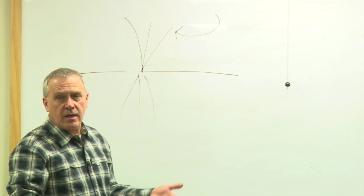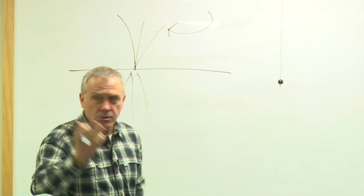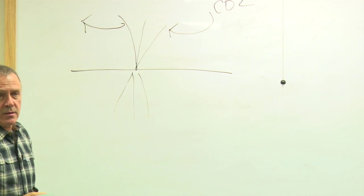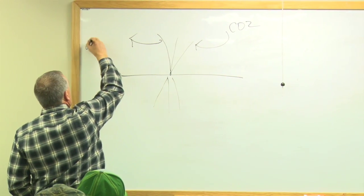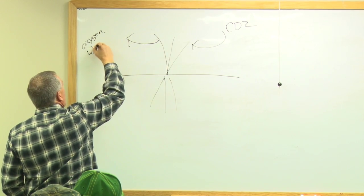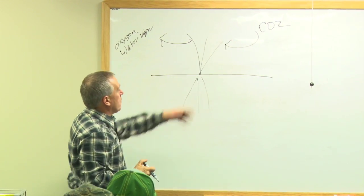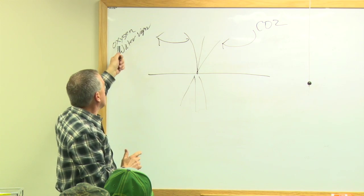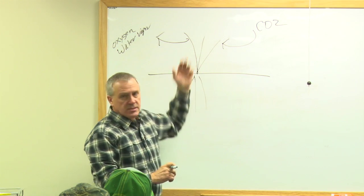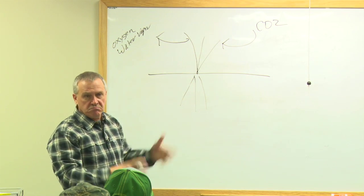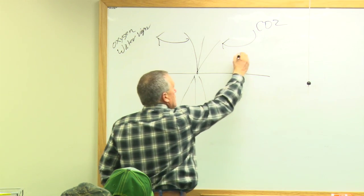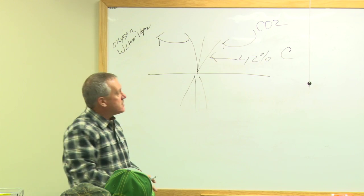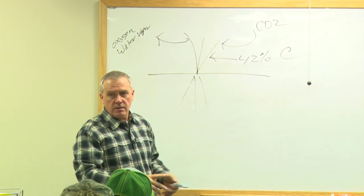What's going to come into the stomata out of the atmosphere? CO2. What's going to come out of the stomata? Oxygen — and probably water vapor. When the stomata is open, CO2 comes in during the day, and since it's open, we're also going to lose some oxygen and some water vapor. After that transaction, we've got carbon in the plant. About 42% of that plant is going to be carbon — above ground, below ground, etc. So there's a whole lot of carbon in a green plant.